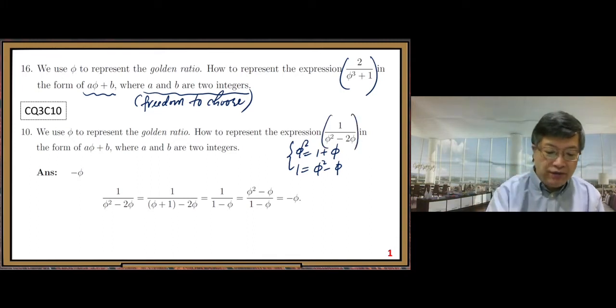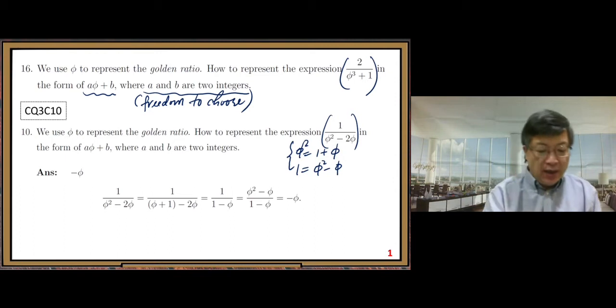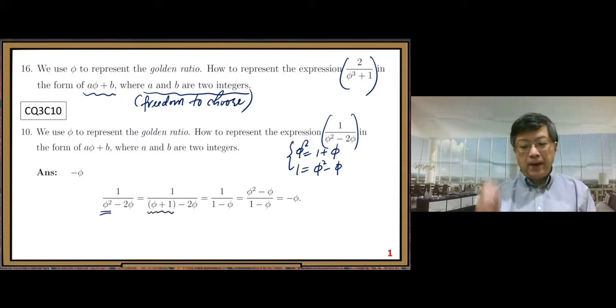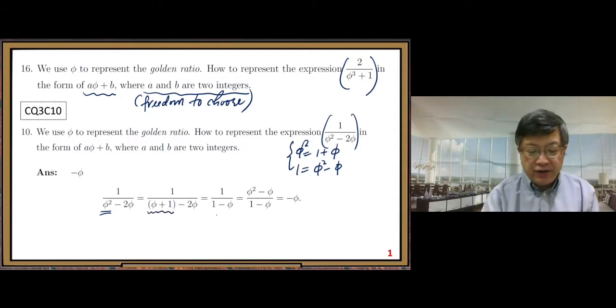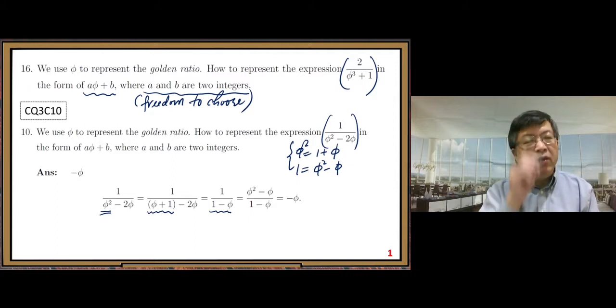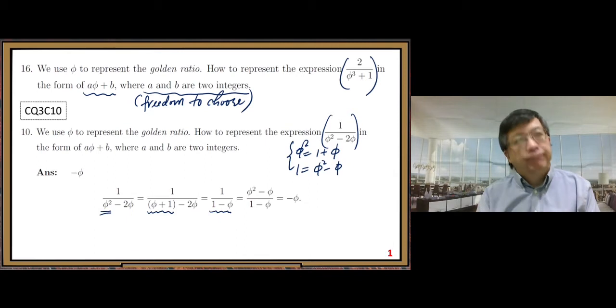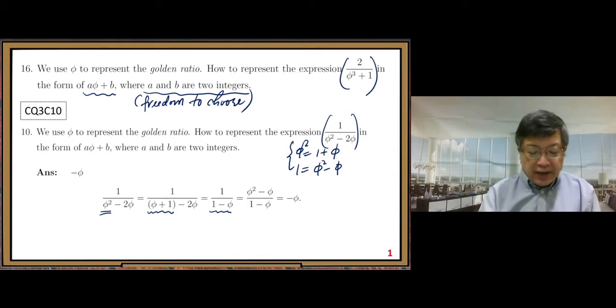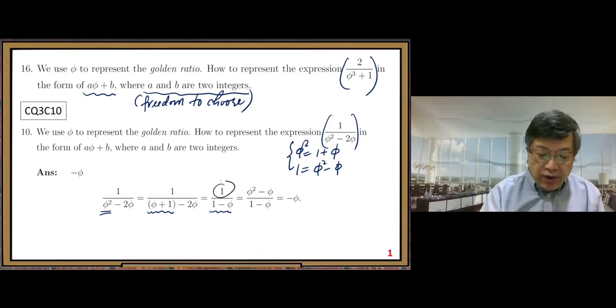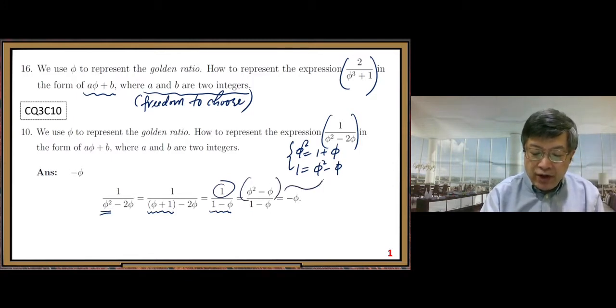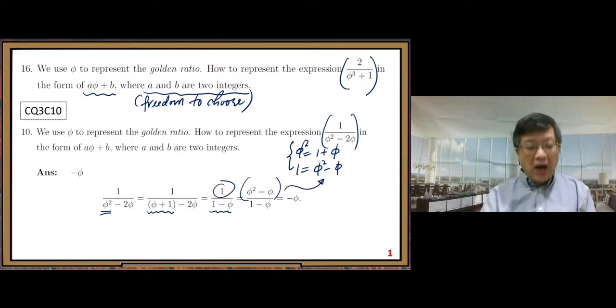The denominator first, we replace φ squared by φ plus one. Then after simplification, we get one minus φ, the denominator. Next round, numerator one, we replace it by φ squared minus φ.